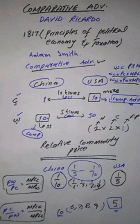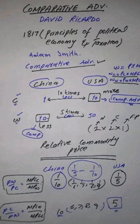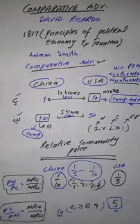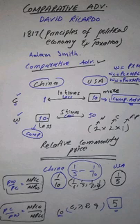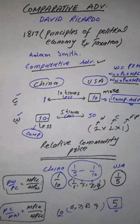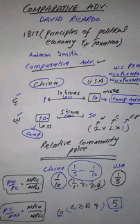Therefore, according to David Ricardo, for mutually beneficial trade we do not need absolute advantage — we only need comparative advantage. If comparative advantage does not exist, then trade is not possible. There is only one exception to Ricardo's model: if one nation is equally less productive in both commodities — that is, if the absolute disadvantage or less efficiency appears in both products in the same proportion — then comparative advantage also ceases to exist, Ricardo's model does not apply, and trade is not possible.